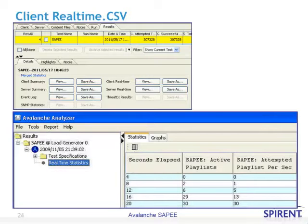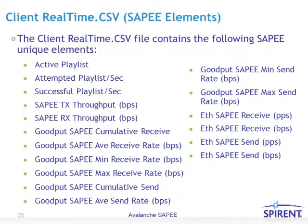You could also view the interfaces or the user profiles, which will give you the URL information and the numbers associated with that URL. The client real-time.csv file — accessed via the client real-time view button — contains the following SAPI unique elements: active playlist, attempted and successful playlists per second, throughput for transmitting and receiving, good put, cumulative receive, average/minimum/maximum receive, cumulative send, average/minimum/maximum send rate, as well as Ethernet SAPI send and receive information.